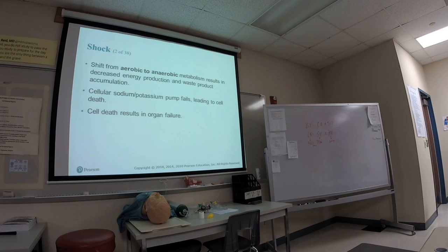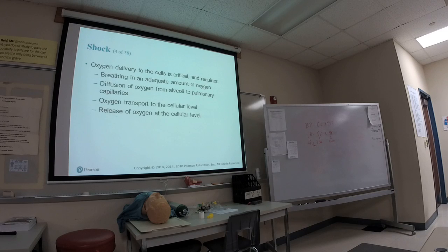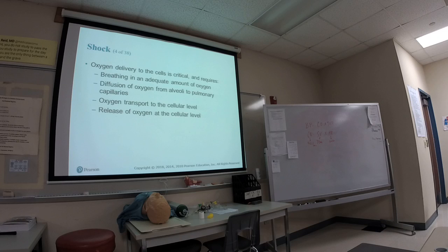If we start losing cells, we lose organs — organ failure follows. The treatment is to restore perfusion so we can deliver oxygen and nutrients to the cells. If we don't have enough oxygen, we won't be breathing adequately, we won't get proper diffusion, and we won't be able to transport oxygen. When we talk about oxygen transport, remember: it travels via blood — specifically red blood cells and hemoglobin.